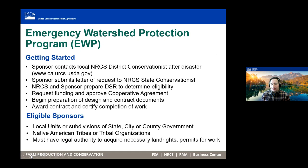To get started, please contact your local NRCS office — they're more than willing to help. They'll go out to assess eligibility to understand what's going on. We'll do a cooperative agreement and work with the sponsor throughout the process to help them complete the work under this program. One of the main things to know is you must have the land rights and permits to work — those are a must.